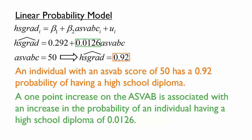A linear regression model like this one with a binary dependent variable is also called a linear probability model, because the model is linear in parameters, its predicted values can be interpreted as probabilities of the dependent variable equaling 1, and the coefficient on an independent variable is the marginal effect of that variable on the probability of the dependent variable equaling 1.